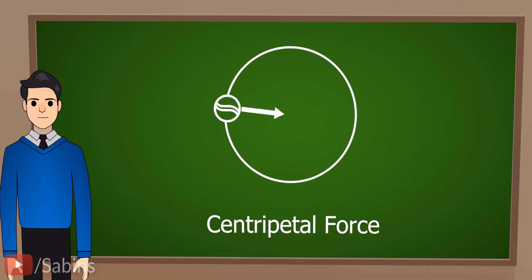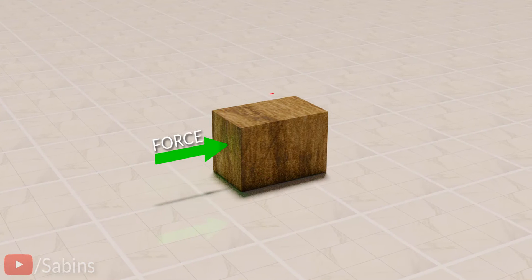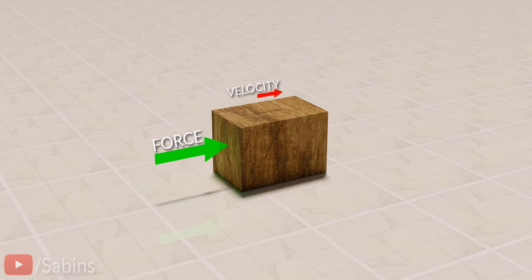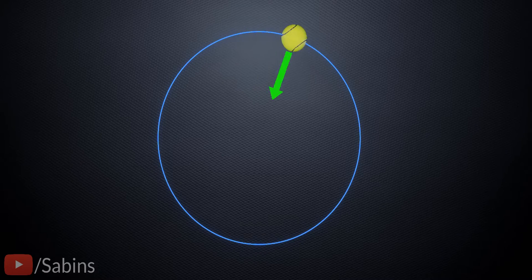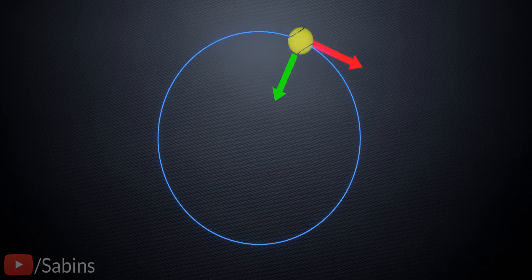At first glance, centripetal force looks strange. In mechanics, we generally see velocity in the direction of the applied force. Why then is centripetal force perpendicular to the velocity?